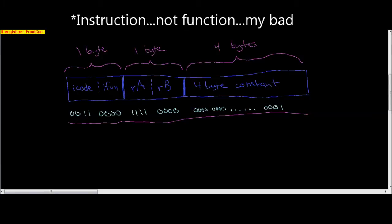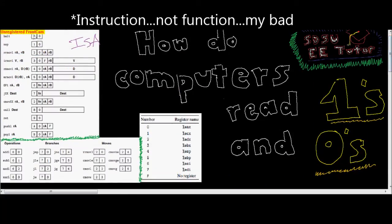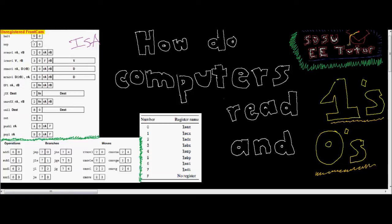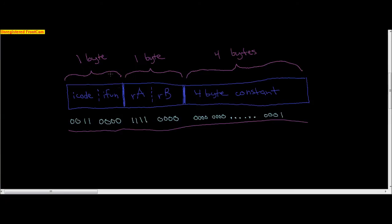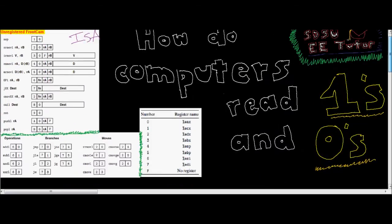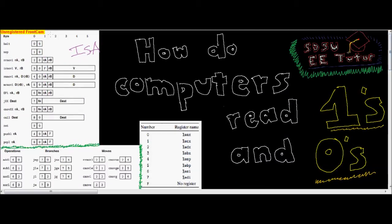So iCode tells us which function it is — zero, one, two, three, four — what type of instruction are we doing? iFun tells us which function of that instruction we want. So looking back up, when we hit the fn field, this means there are multiple functions. This is OPl, so that's your addl, subtract L, xor, and other functions.